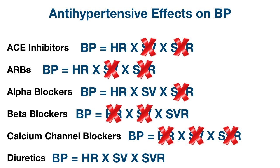Finally, diuretics ultimately decrease plasma volume by inhibiting water reabsorption in the kidneys. This decrease in circulating plasma volume will decrease stroke volume.